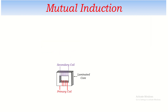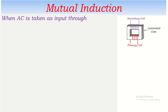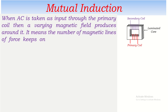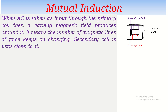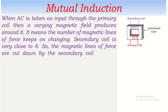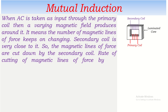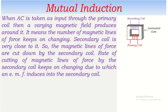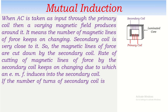Let's talk in a little more detail about how it happens. When AC is taken as input through the primary coil, a varying magnetic field is produced around it, meaning the number of magnetic lines of force keeps on changing. The secondary coil is very close to it, so the magnetic lines of force are cut by the secondary coil. The rate of cutting keeps on changing, due to which an EMF is induced in the secondary coil. This is mutual induction.